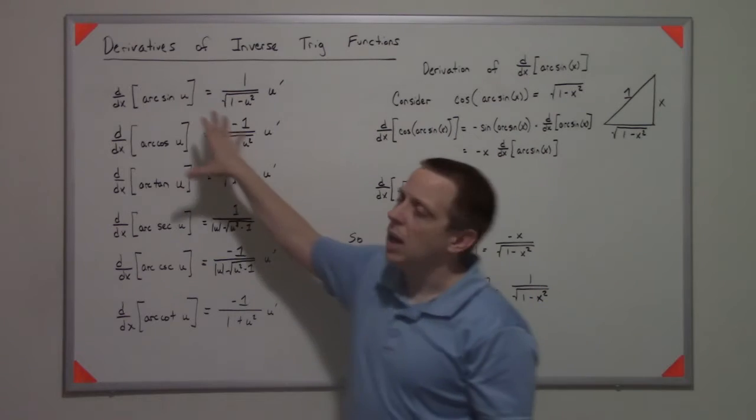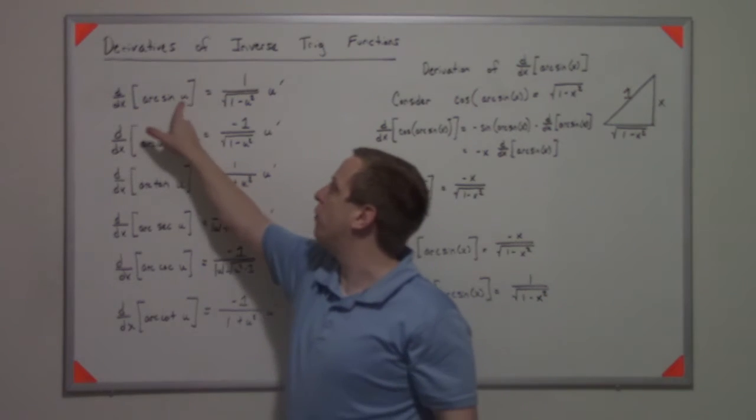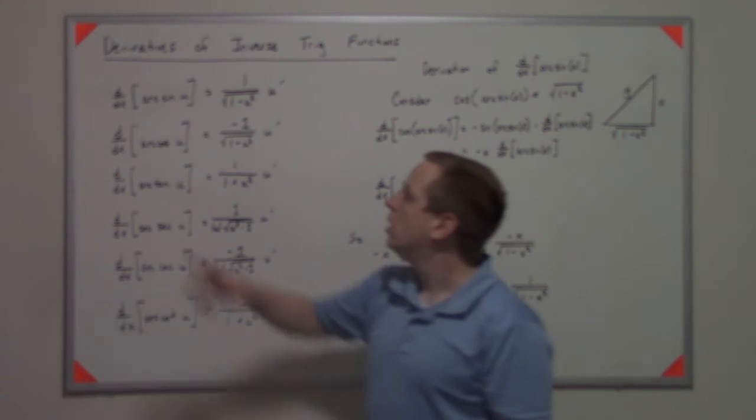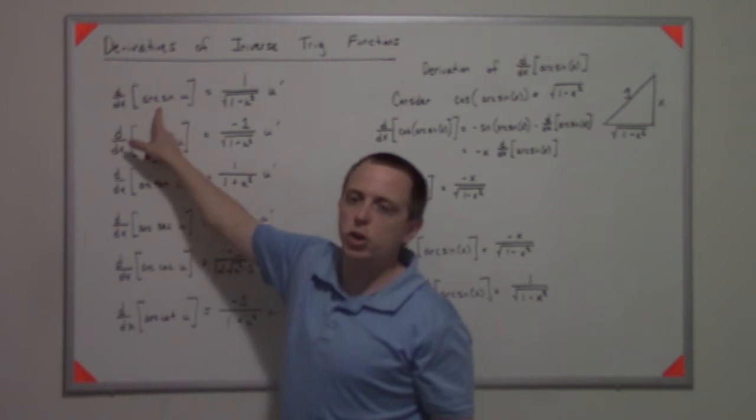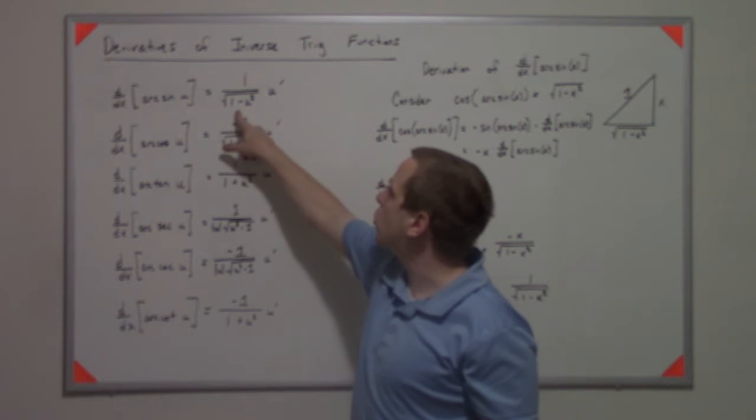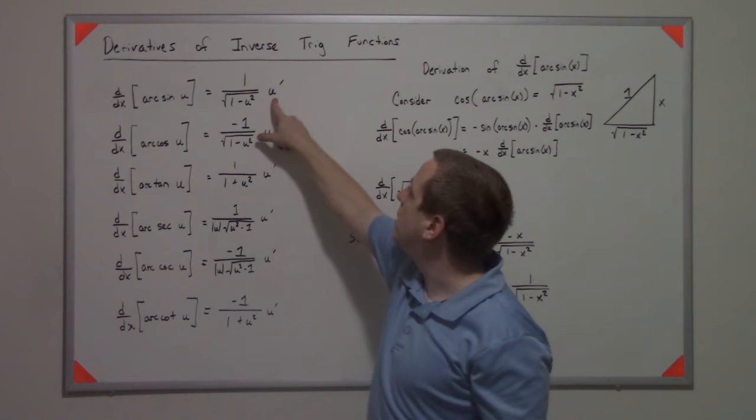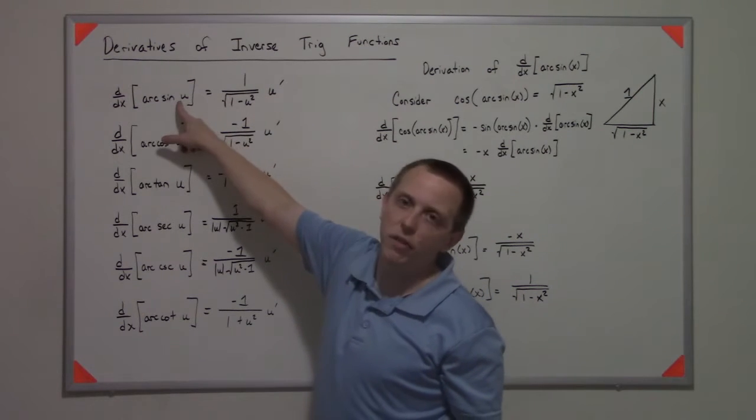This is the chain rule version. Instead of arc sine of x, it's arc sine of u, or u as a function of x. So the derivative of the arc sine function is 1 over the square root of 1 minus whatever it is squared times the derivative.